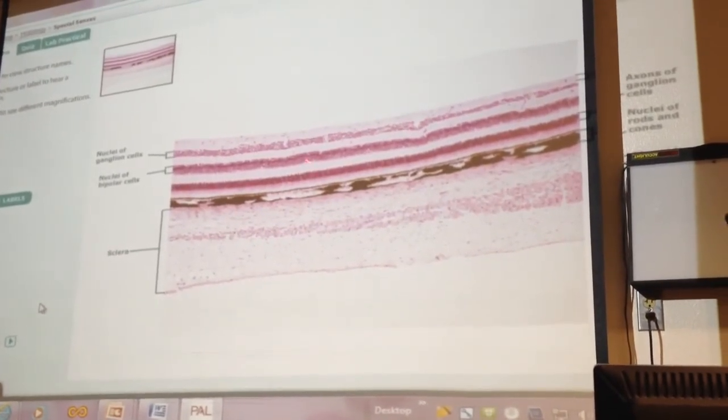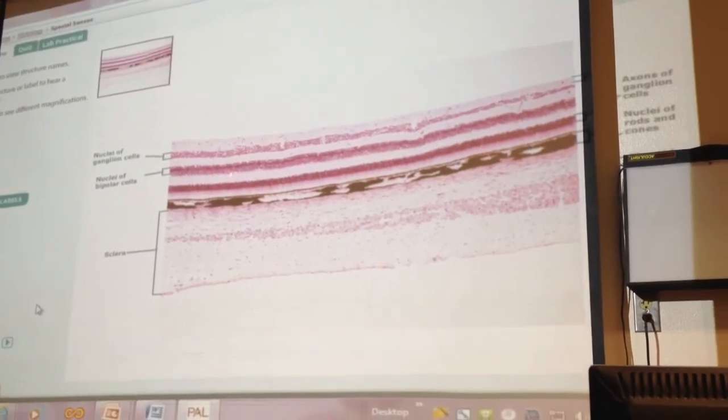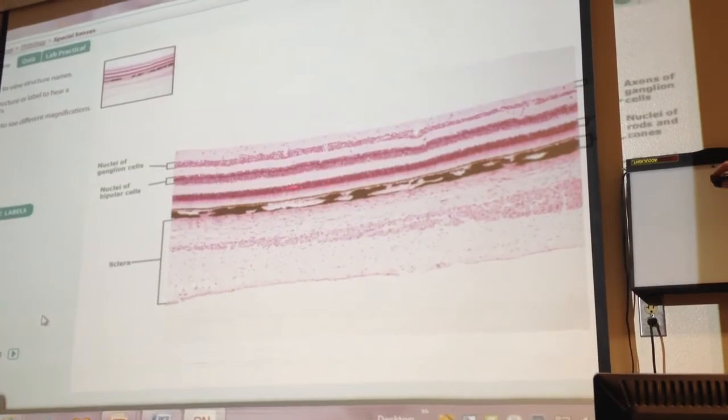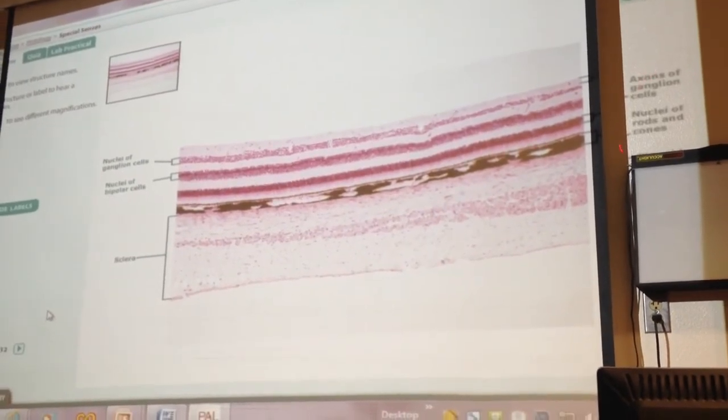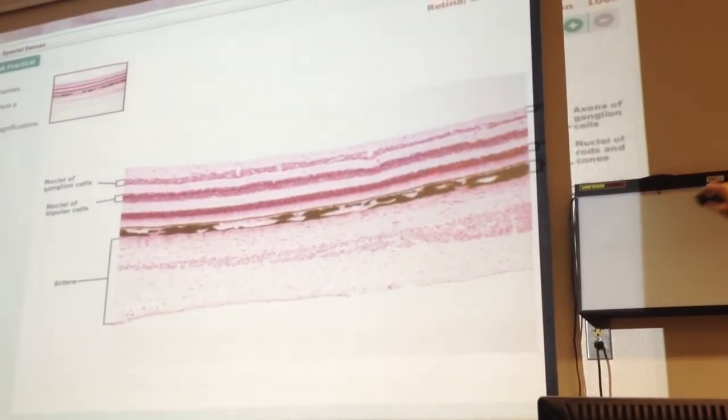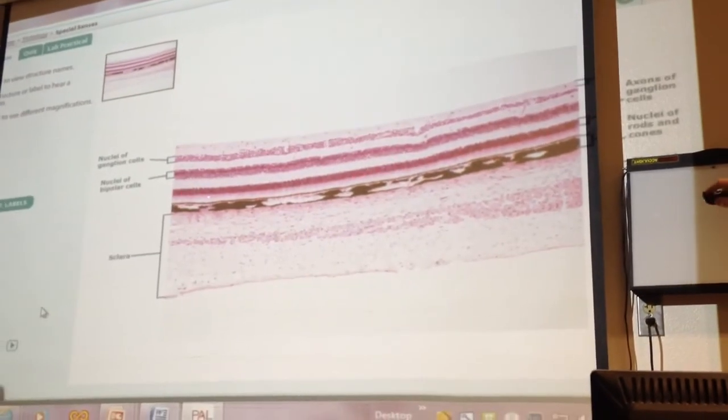So this one then shows you the rows of cells. So it's best to keep in mind that the rods and cones. Oh, it's off here. The labels are off there. Oh, that's okay. The rods and cones are the innermost. Okay, so you do have to kind of remember the order. The rods and cones are the innermost layer of nuclei.